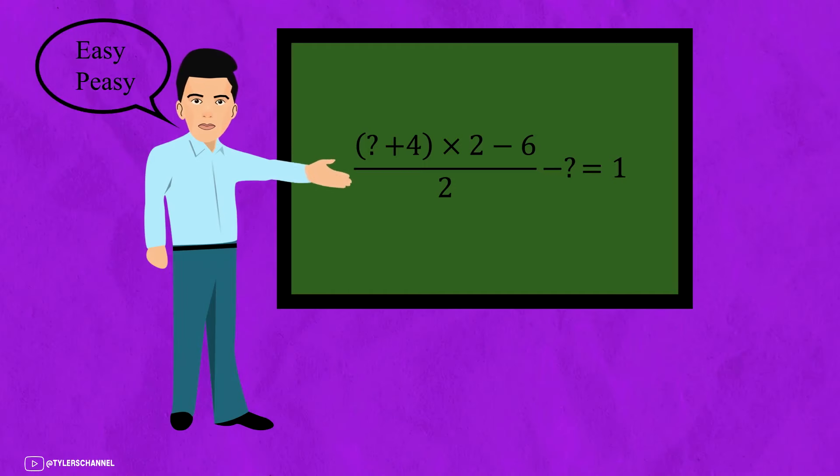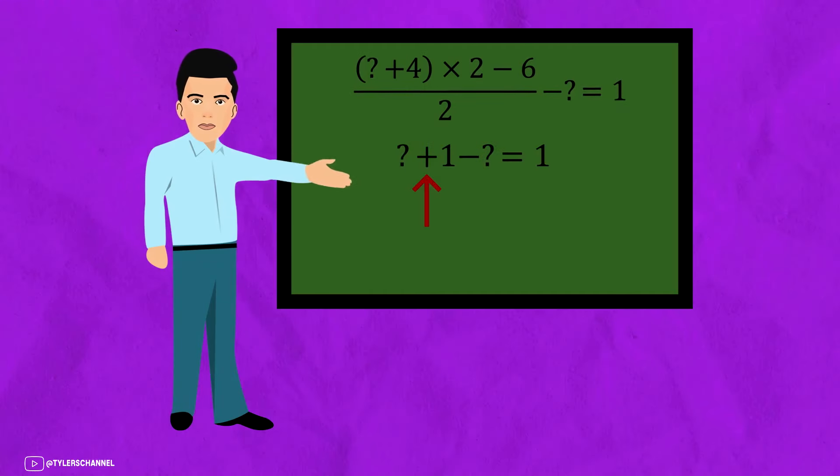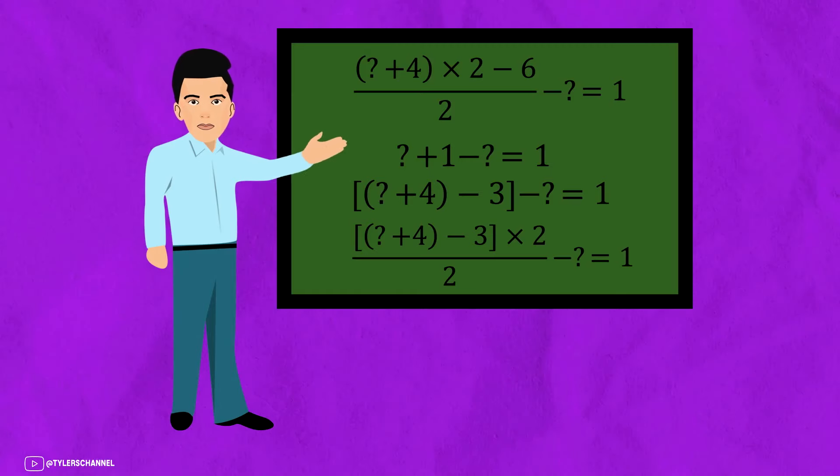Earlier I said this trick was simple and it is because it just adds 1 to a number and then subtracts said number and equals the whole thing to 1 but tweaks the expression a little bit to make it seem complicated.